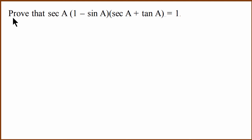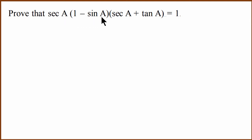Welcome to this video. This video is a trigonometry problem solving. The question is: secant A multiplied by (1 minus sin A) multiplied by (secant A plus tan A) equals 1. They have asked us to prove that secant A multiplied by (1 minus sin A) multiplied by (secant A plus tan A) equals 1.